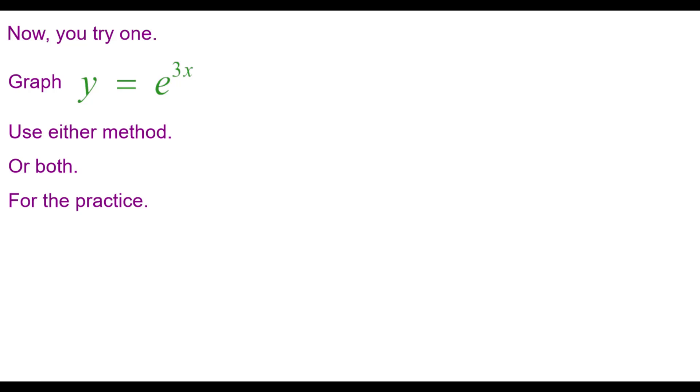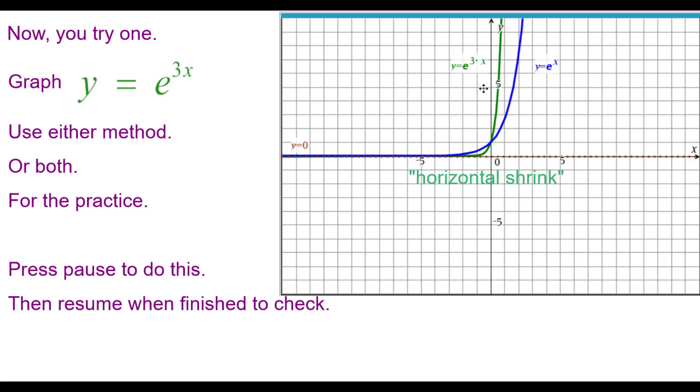Now you try one. Graph y equals e to the 3x power. Use either method or both just for the practice. Press pause to do this and then resume when you're finished to check your answer. And here is the answer. Y equals e to the 3 times x power is a horizontal shrink compared to the blue parent function.